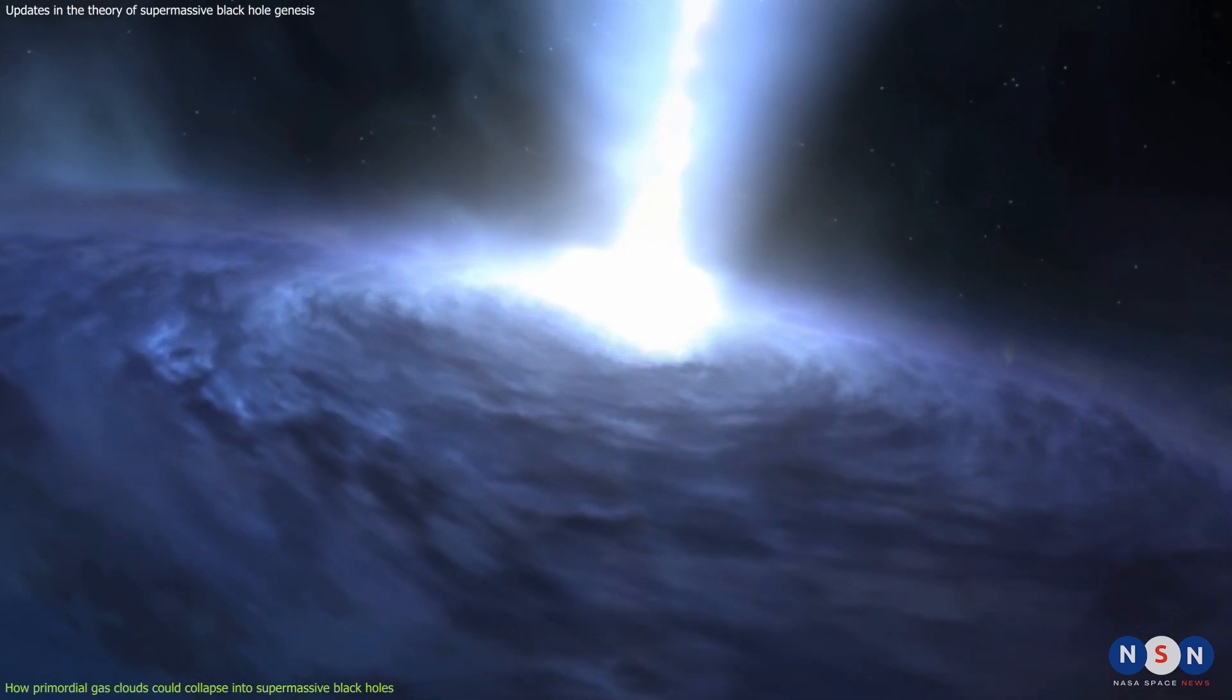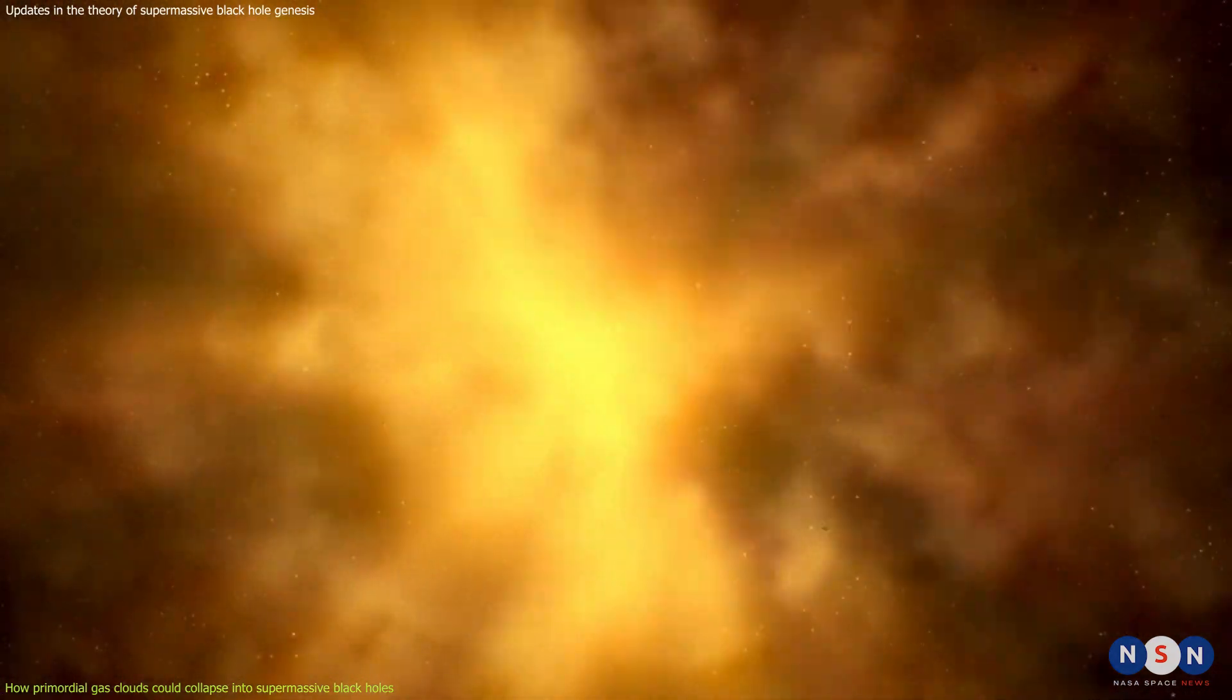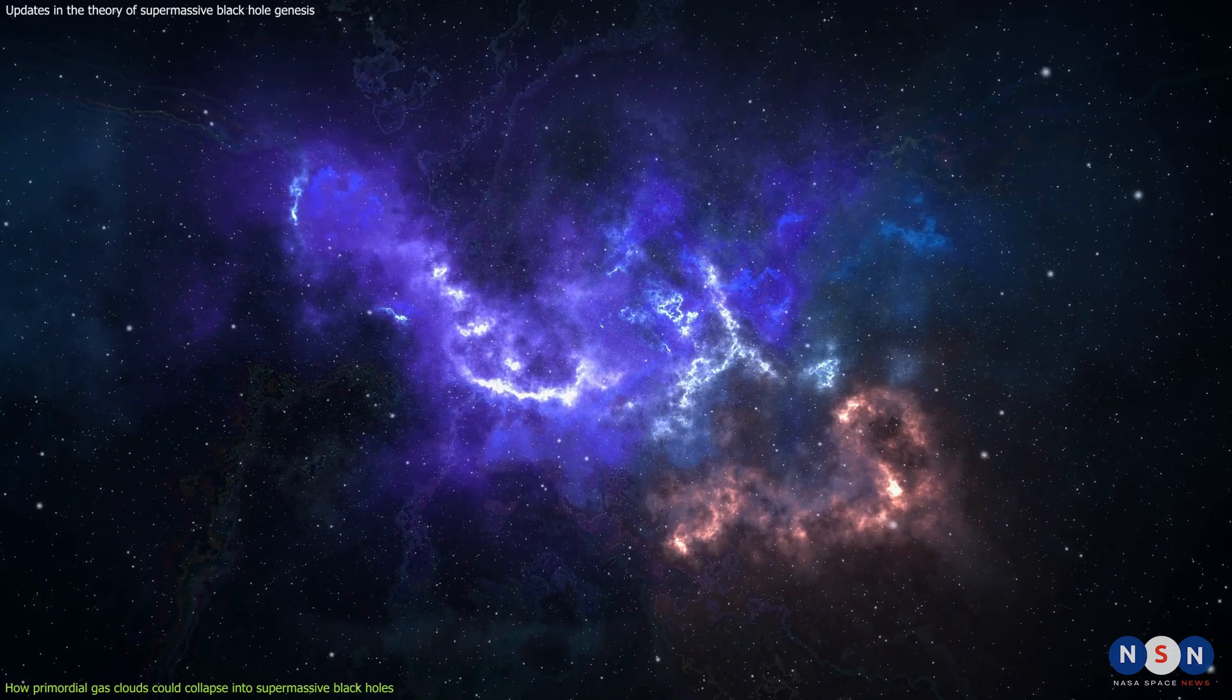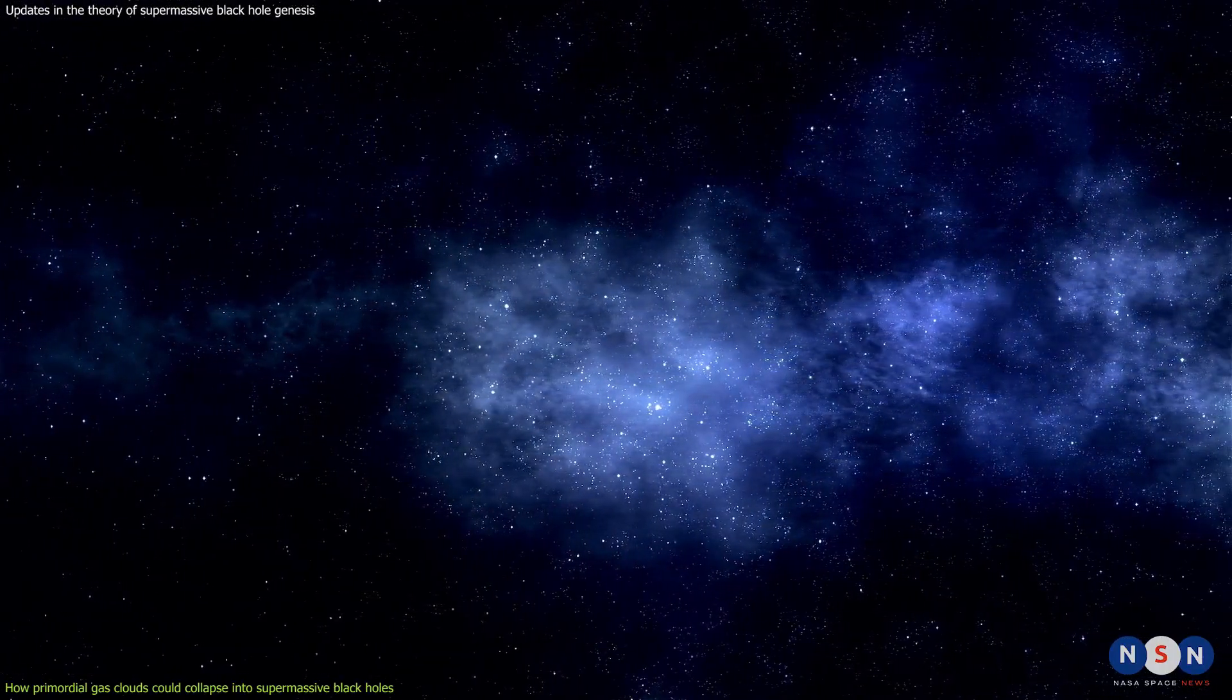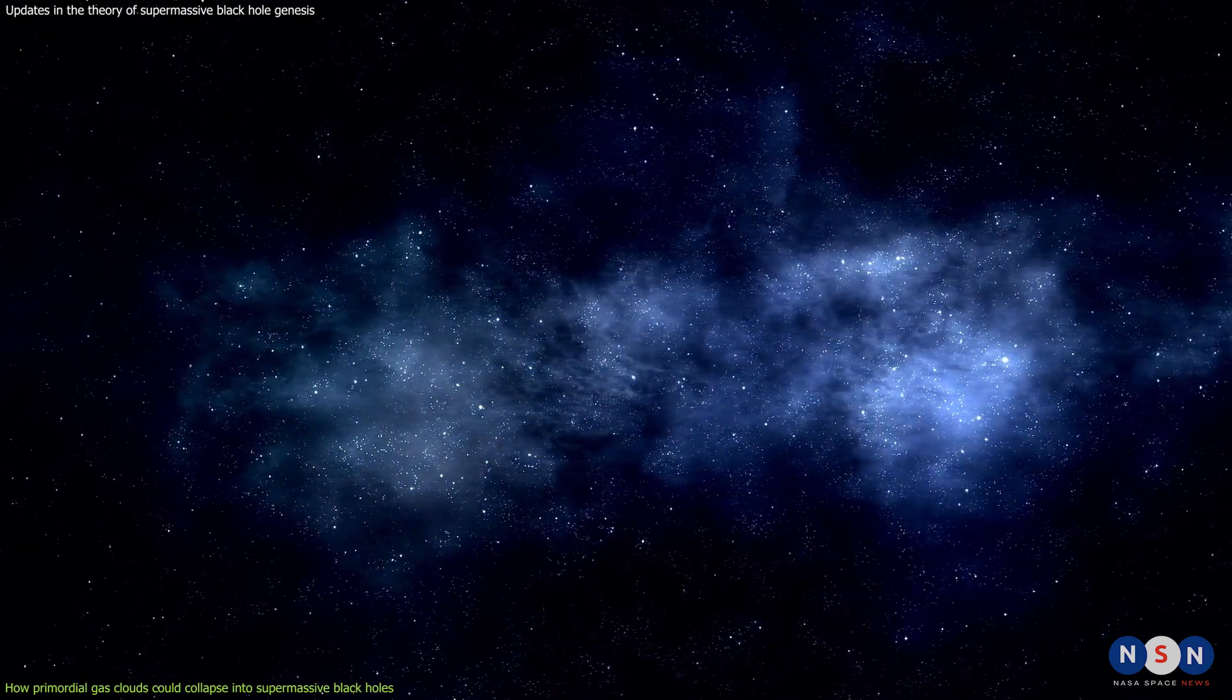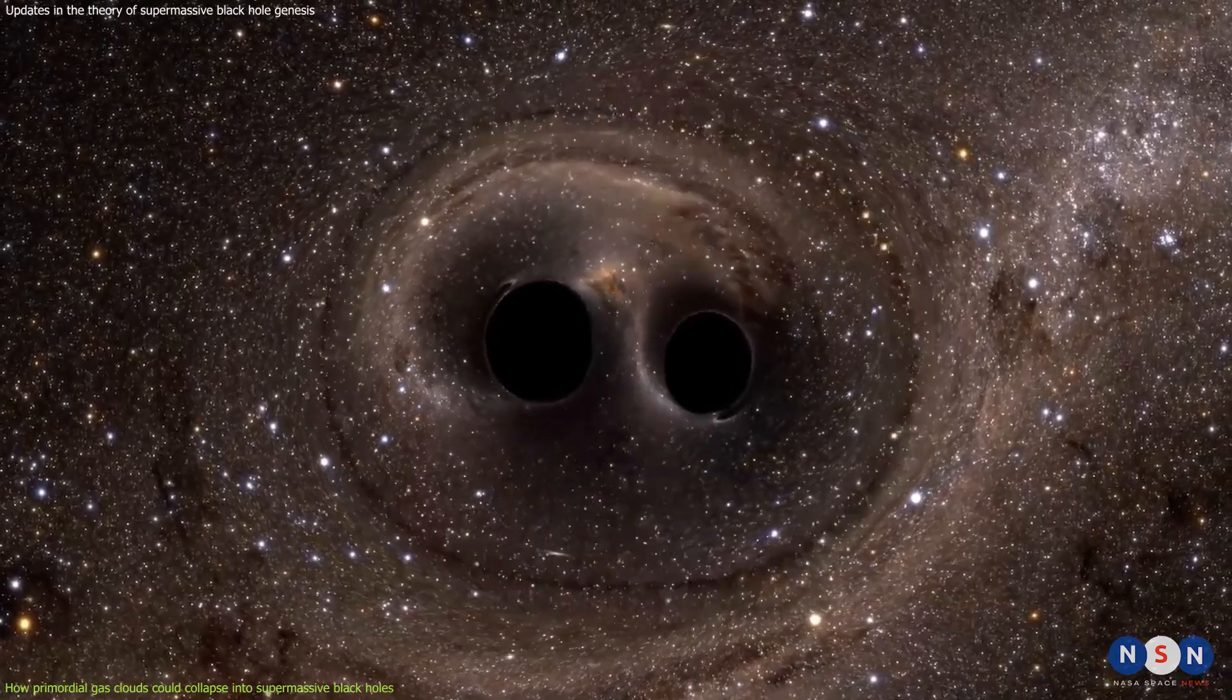The idea is that in some regions of the early universe where gas was very dense and metal-poor, meaning that it contained very few elements heavier than hydrogen and helium, the gas could collapse under its own gravity and form massive clumps that could reach up to 100,000 times the mass of our sun.